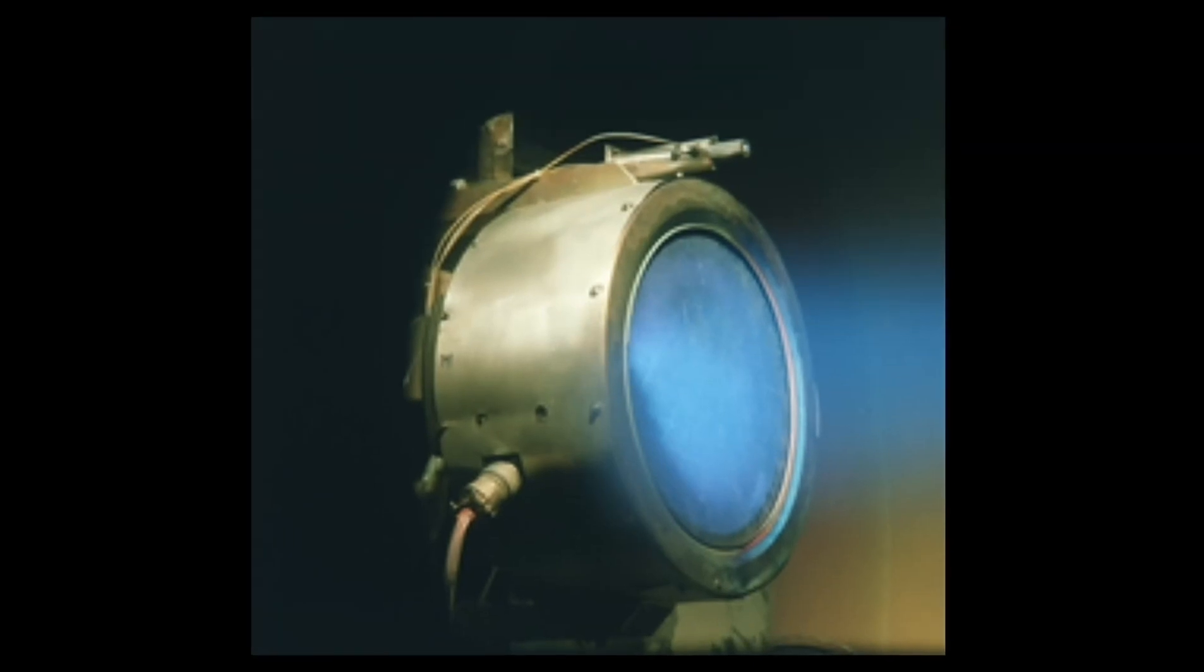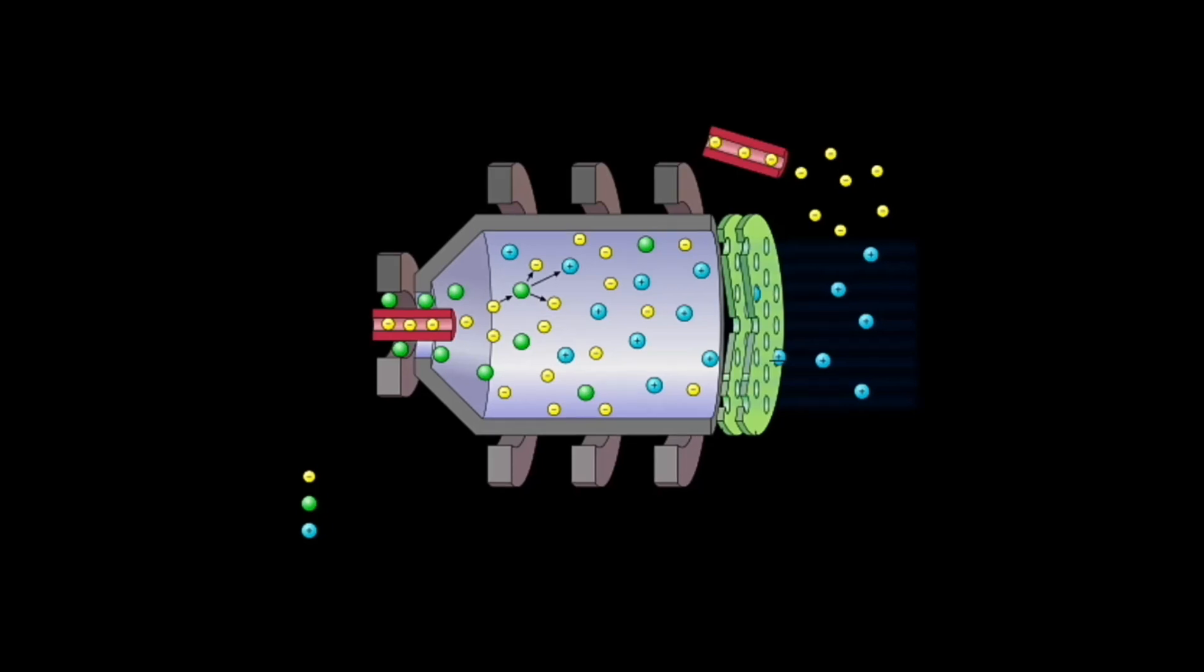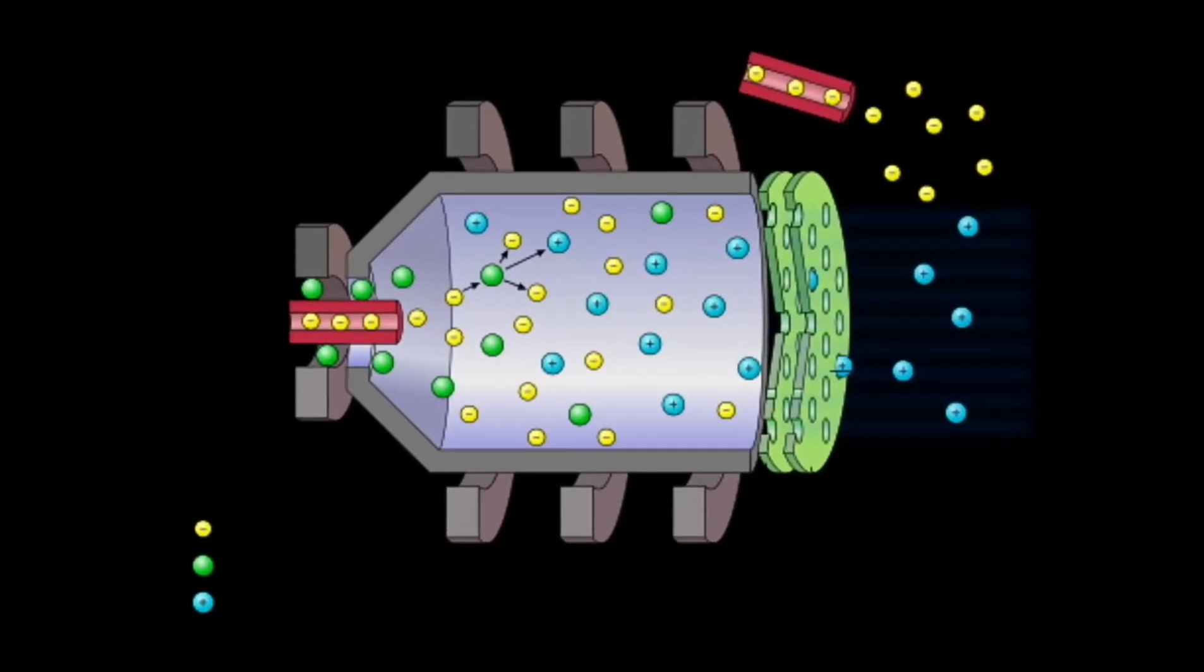It is also inert and has high storage density, therefore it is well suited for storing on spacecraft. In most ion thrusters, electrons are generated with the discharge hollow cathode by a process called thermionic emission.